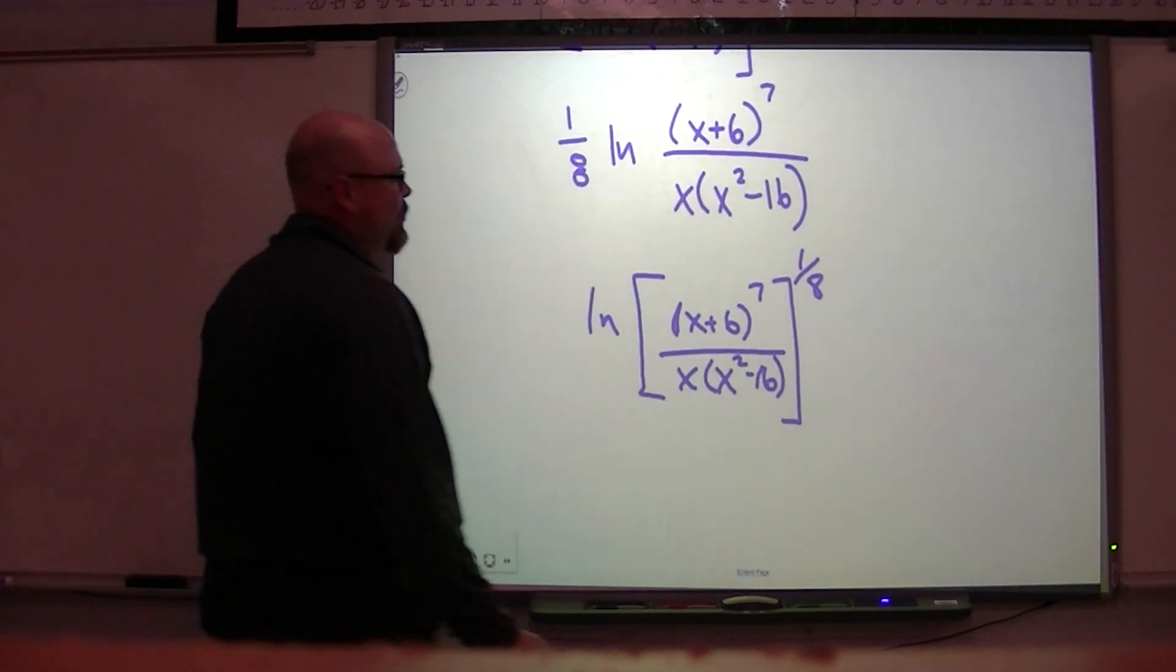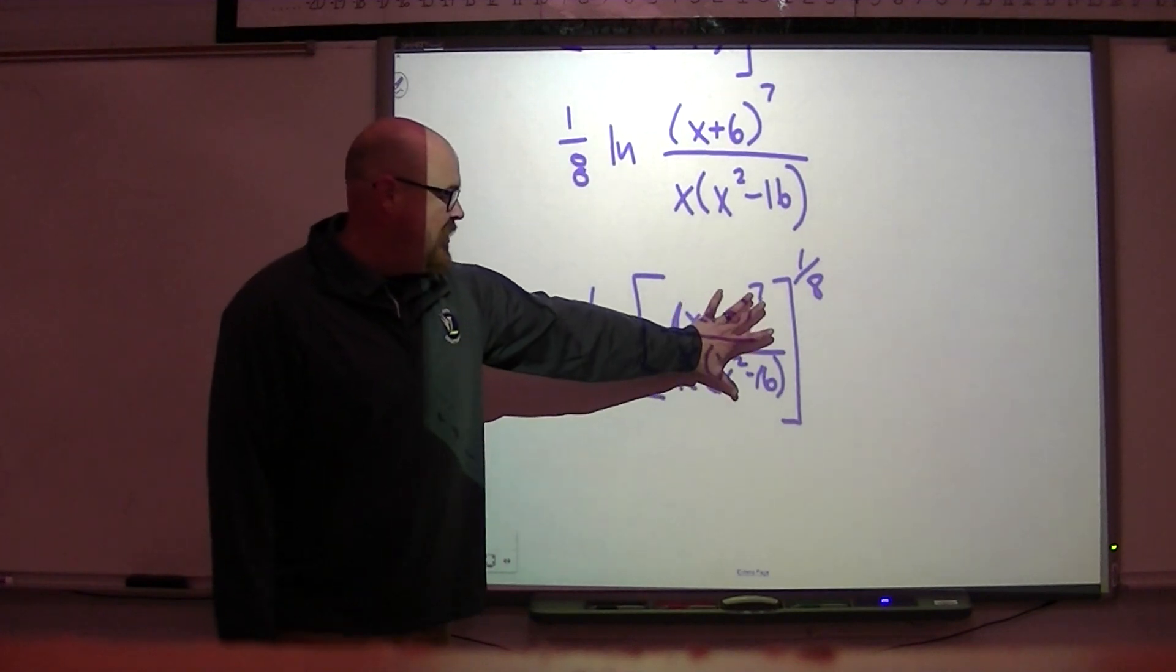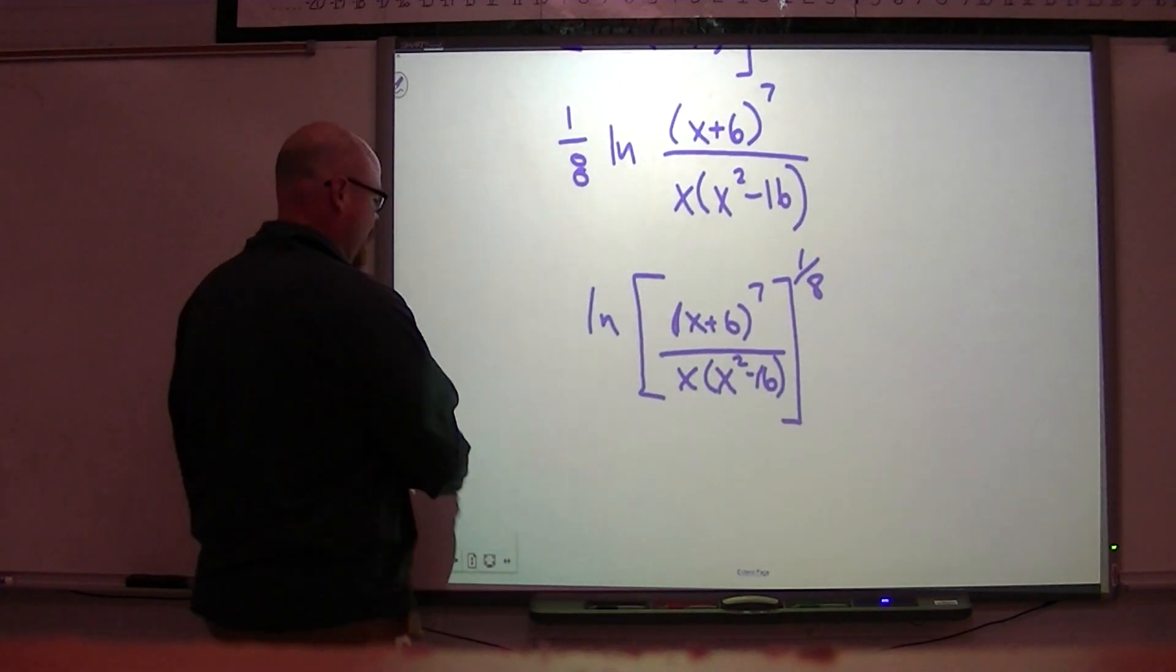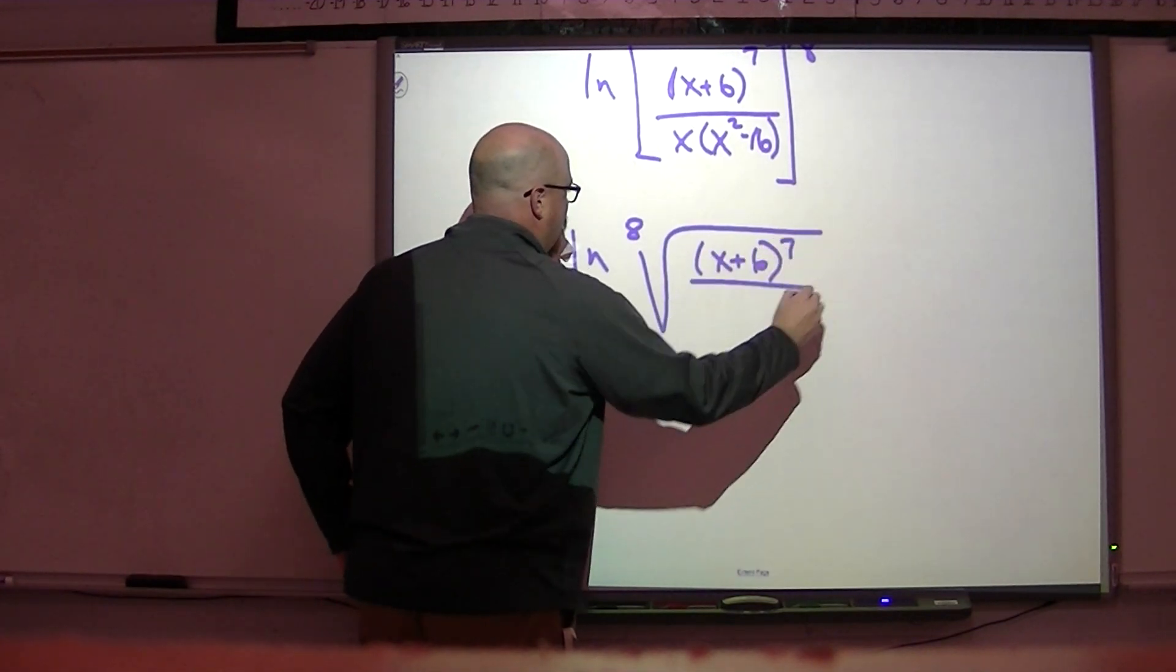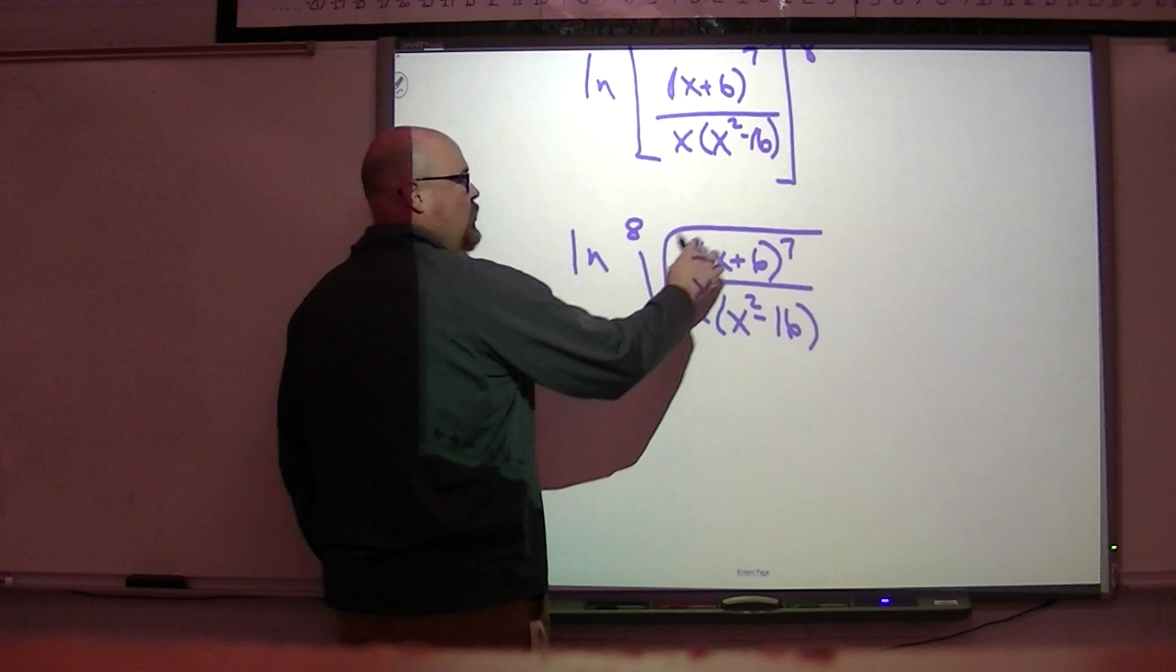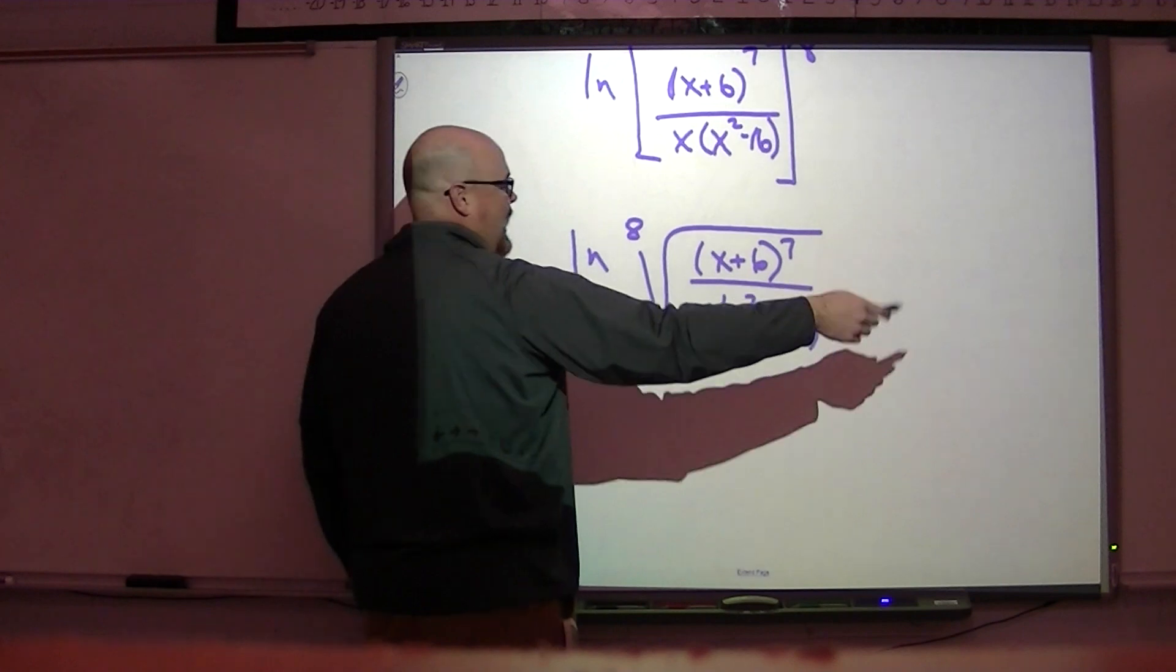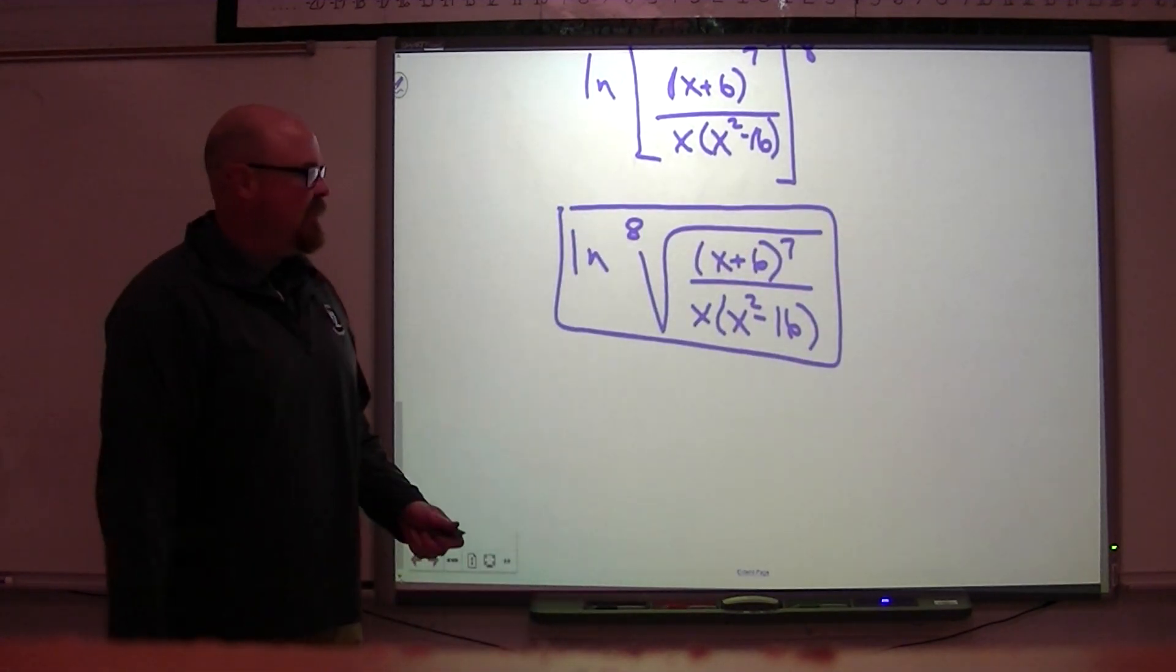And before you start going crazy with all your exponent rules and saying, well, this gets multiplied by that, and this gets multiplied by that, and you start worrying about what to do with that. If all of this is raised to the one-eighth power, and I'm not supposed to have rational exponents, then I can rewrite this where instead of raising all of this to the one-eighth power, I can put it all under an eighth root. And again, I don't need parentheses anymore. This is its own grouping symbol. A radical symbol is its own grouping symbol. So I don't need parentheses around this. I know all of this is under here. I don't need to put parentheses around this inside the log, because I'm not adding or subtracting anything else. This is one really horrible-looking term inside this log. So we would put a bow on that and say we're done with that condensing.